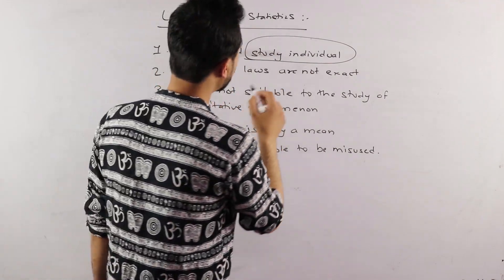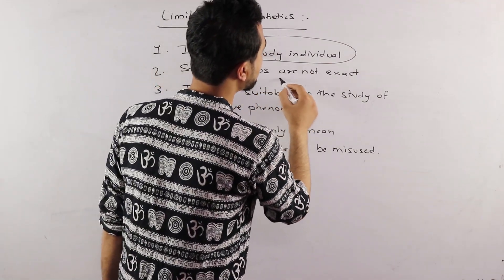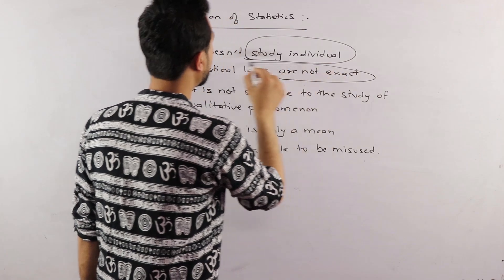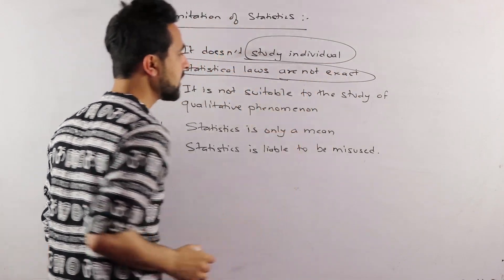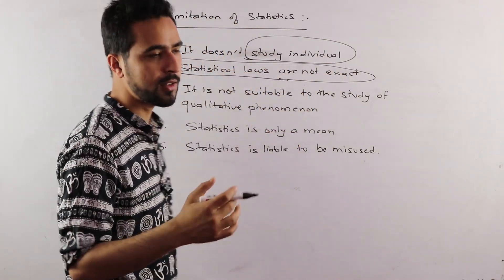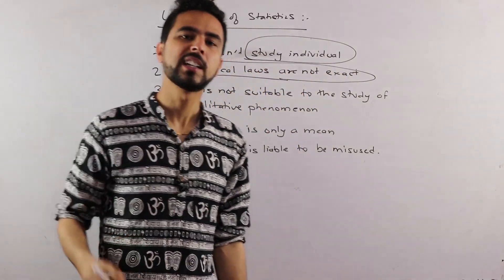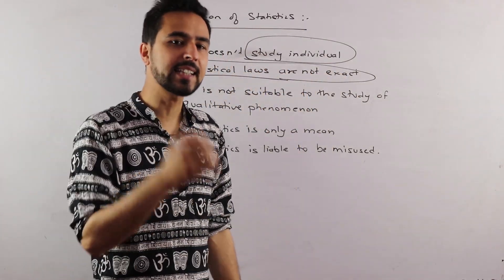Statistical laws are not exact. When you say statistical laws are not exact, it means this statistics law is not exact or accurate.